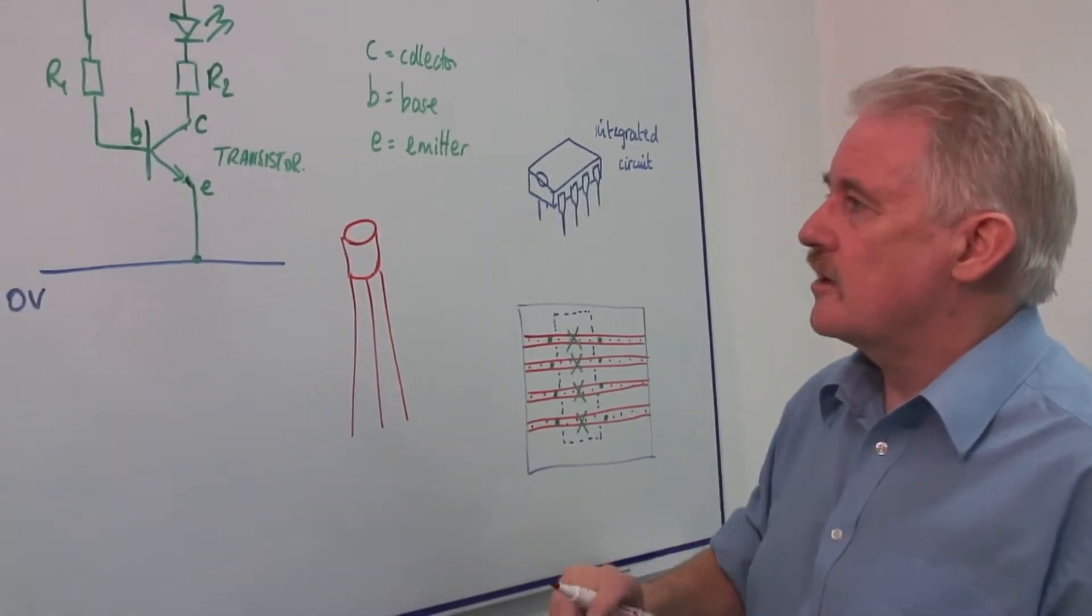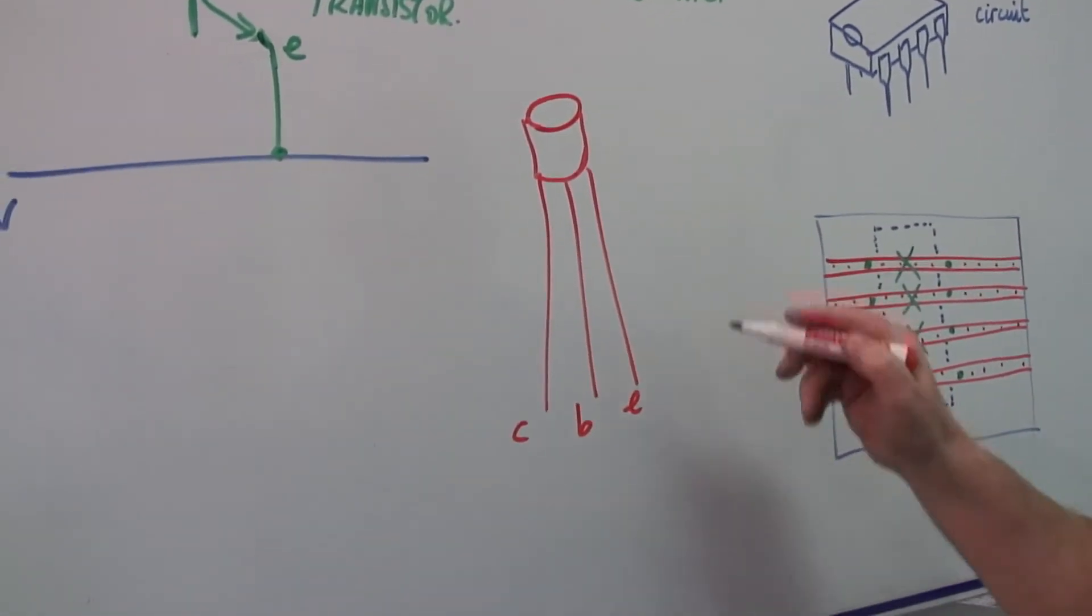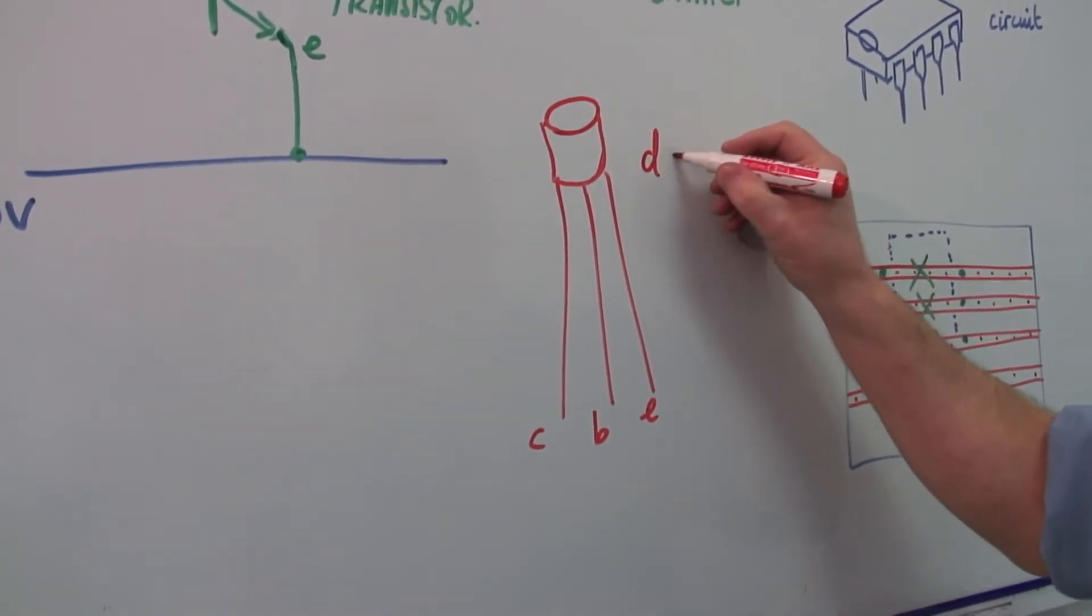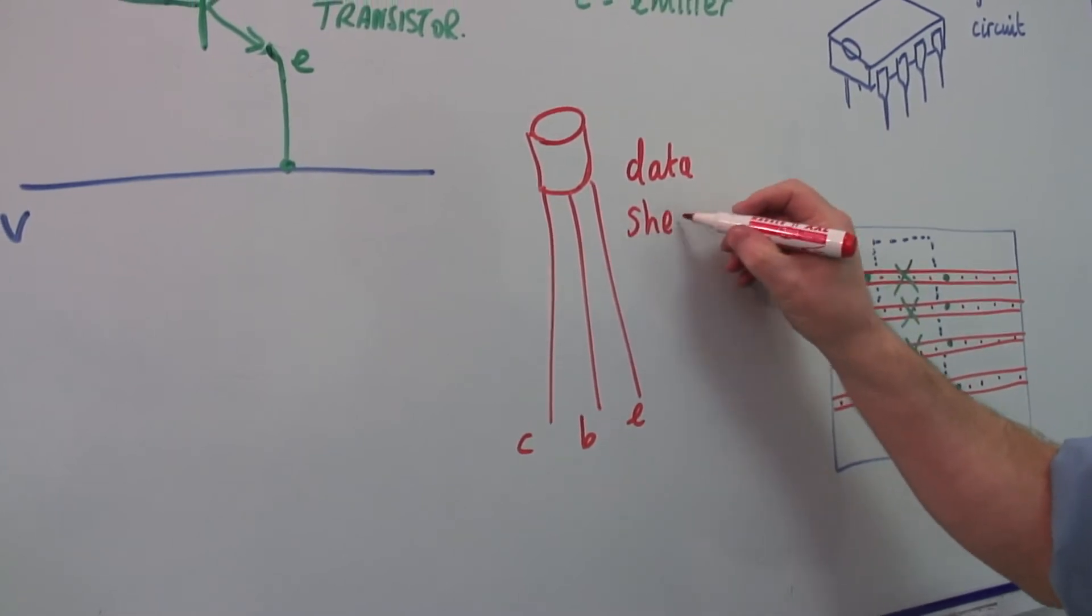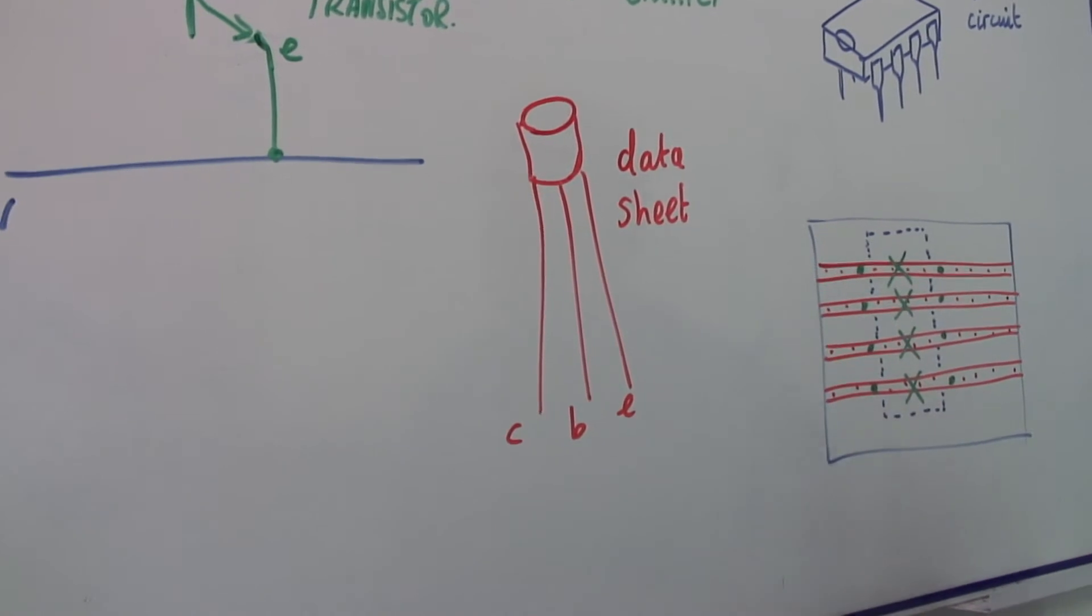with three legs on it, marked C, B and E. To find out which is which, you look at a data sheet which is provided with it. And the data sheet usually also gives you circuit diagrams which will be used with that device.